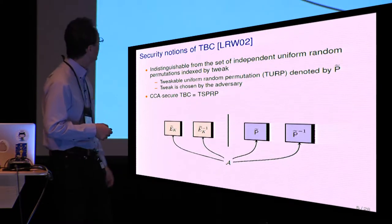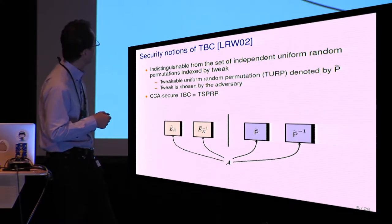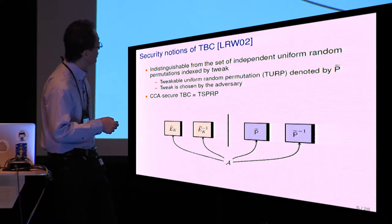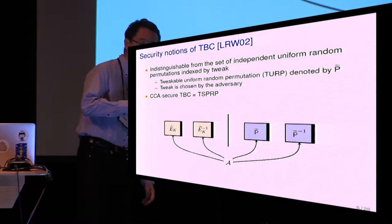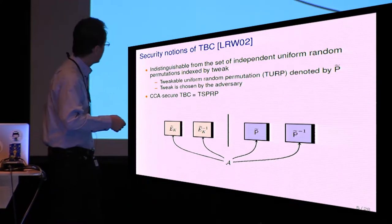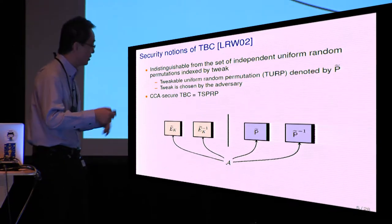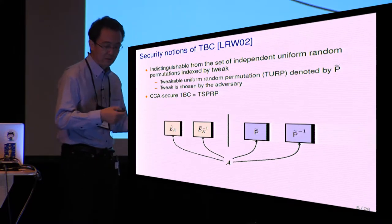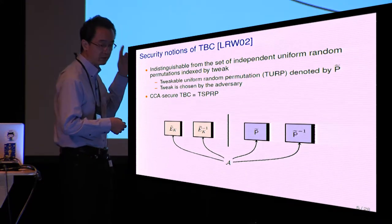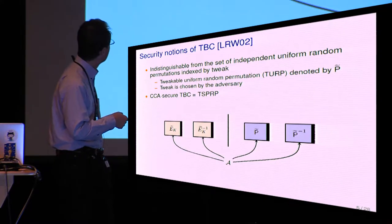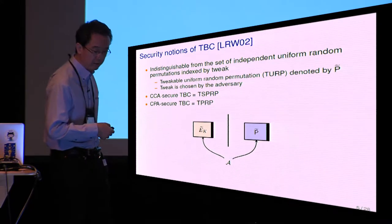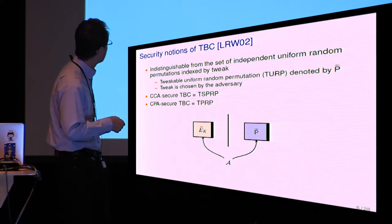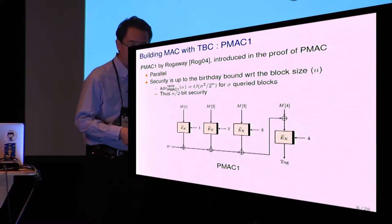For the security notion of TBC, it is indistinguishability from the set of independent, uniform, random permutations indexed by tweak, which I also call the tweakable uniform random permutation, TURP, denoted by TURP. If the adversary cannot distinguish these two worlds, even in a chosen ciphertext attack where the tweak is also chosen, it is called TSPRP. And if it is difficult to distinguish these two worlds, the underlying TBC is called TPRP.